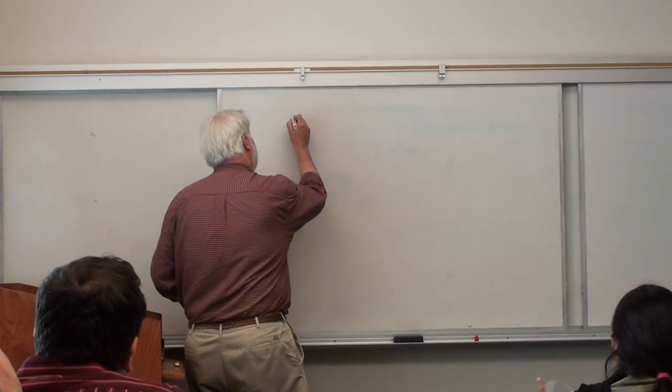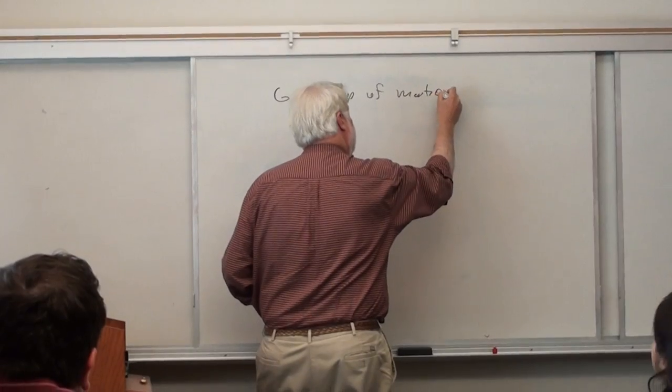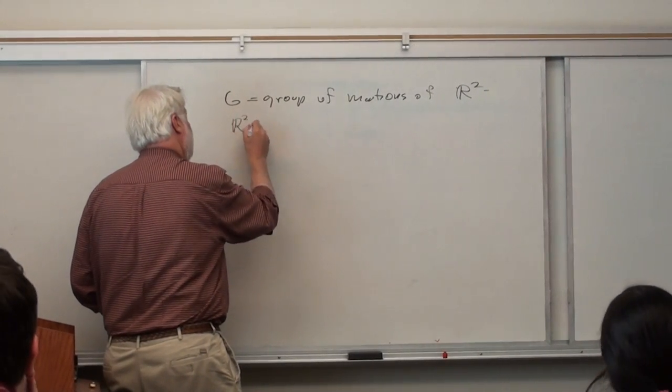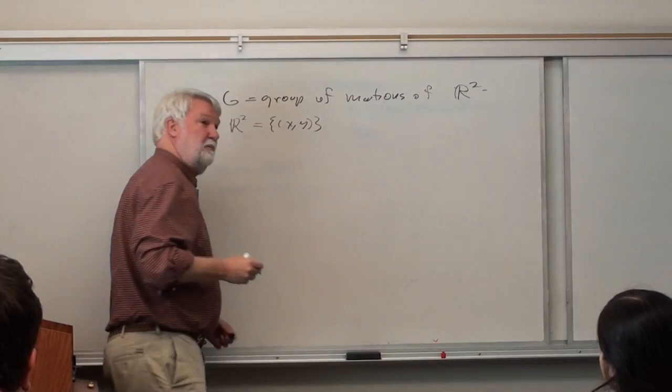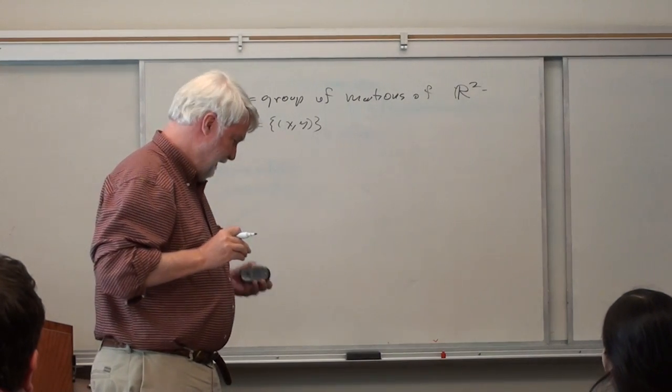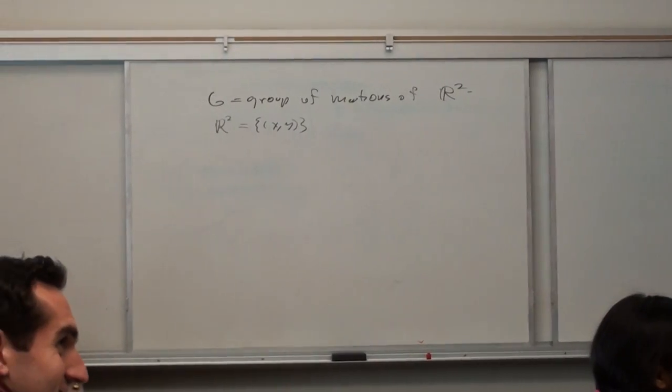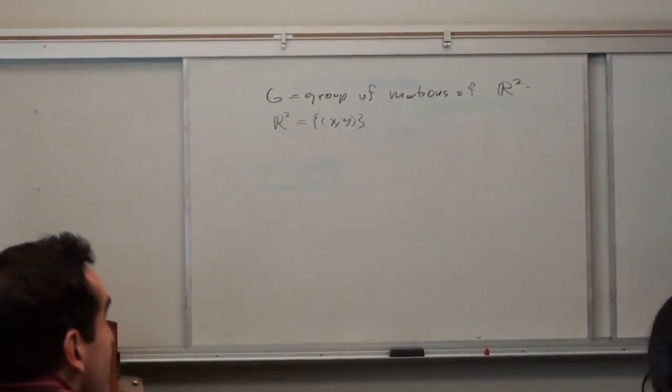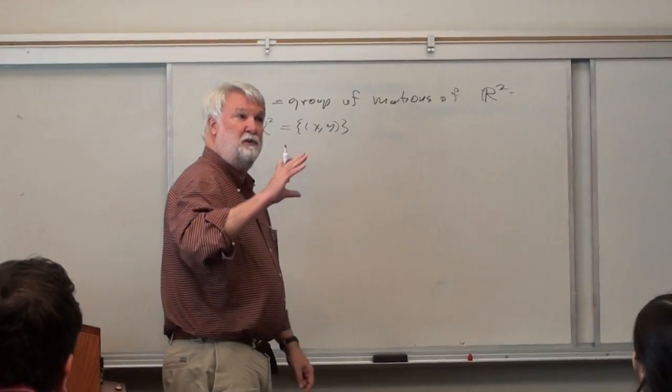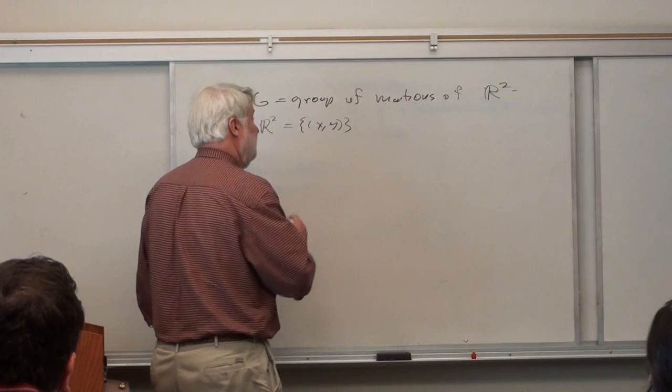First, let's let G equal the group of motions, rigid motions of the plane R2. I'll write them as row vectors. So I have this group of motions, and the group of motions, the orientation preserving ones, is going to be rotation by translation. So I can describe it this way.